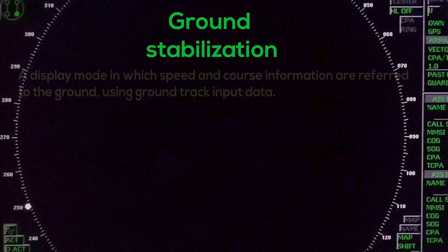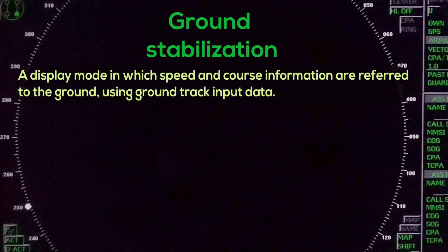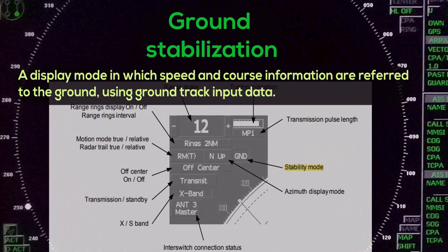Ground Stabilization: a display mode in which speed and course information are referred to the ground using ground track input data.